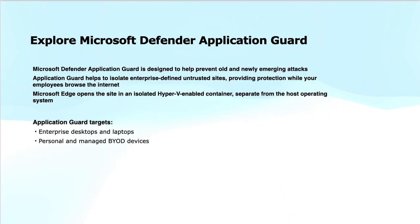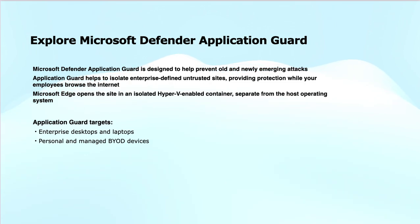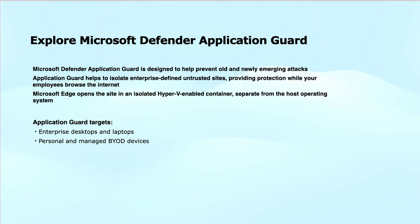Next is Microsoft Defender Application Guard. This is a security feature designed to protect against both old and newly emerging attacks, especially when users are browsing the internet. It isolates potentially untrusted websites by running them in a secure, containerized environment. A key feature is isolated browsing — when users visit any untrusted or enterprise-defined risky sites, Microsoft Edge opens them in an isolated hypervisor-based container that is separate from the host operating system. This ensures that any potential threats from malicious websites cannot reach or affect the rest of the system.